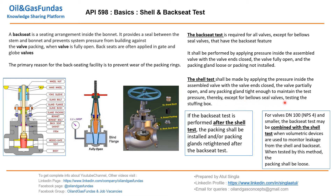Except for bellow seal valves, this is what we need to do before performing the test. For backseat test, it is also required for all valves except bellow seal valves that have a backseat feature. It shall be performed by applying pressure inside the assembled valve with valve ends closed, valve fully open, and the packing gland loose. In shell test the valve is partially open and packing gland is tight; in backseat test the valve is fully open and packing gland is loose.